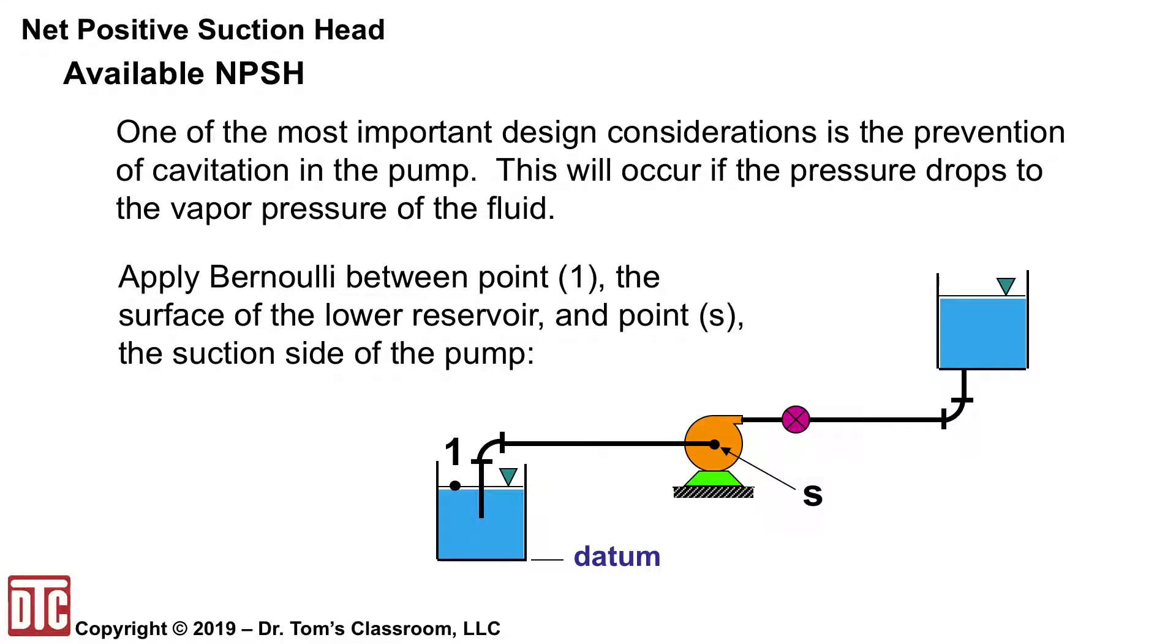So what we're going to do in order to show where this equation comes from is we're going to look at this particular arrangement and make point 1 the surface of the lower reservoir here below the suction side. S for the suction side of the pump. And this is really for centrifugal, although it applies to others. And the datum is going to be down at the bottom. We'll be given different elevations here.